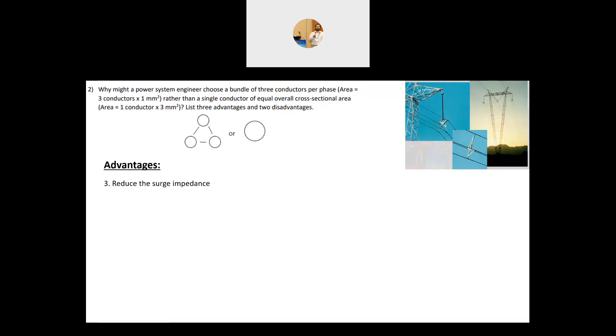The third advantage is to reduce the surge impedance. Now the surge impedance, ZC is equal to root L over C. When we have seen in the previous two points, L has been reduced, C has been increased, then the total C will be basically reduced.